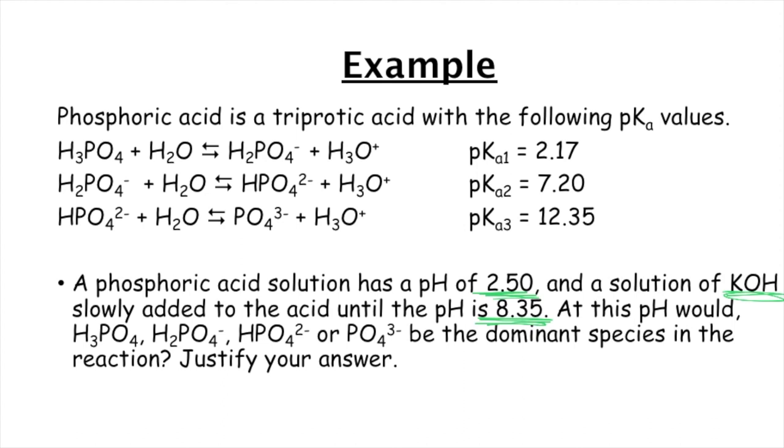It wants us to tell what the dominant species is going to be at that point. Okay. So, again, 8.35 is going to put us in this range right here, right?